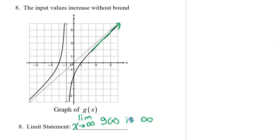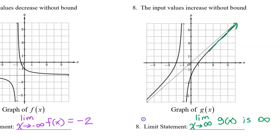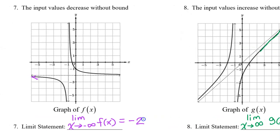Notice that I always use the word 'is' when the limit is an infinity, whereas I use an equal sign when the limit is a number.